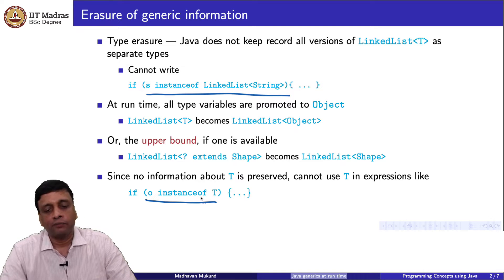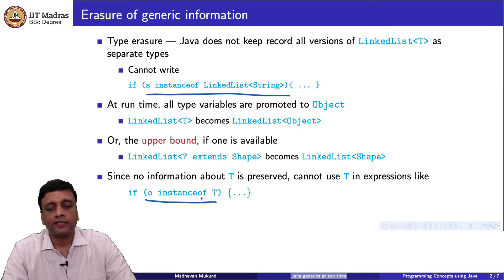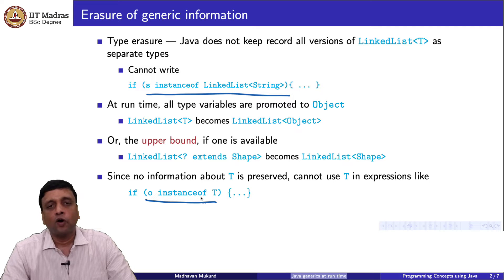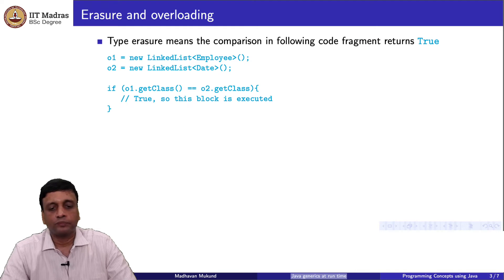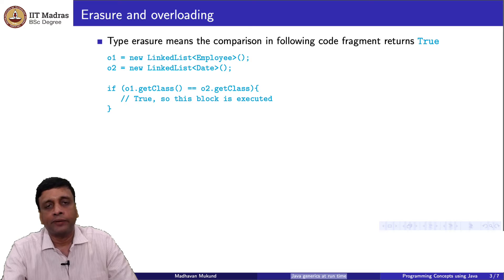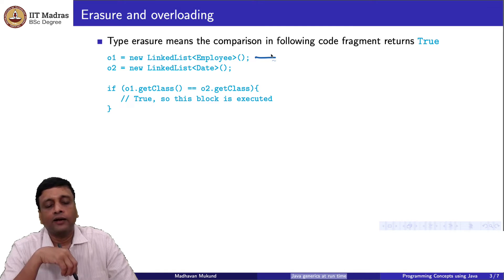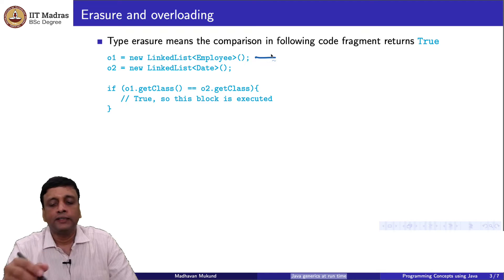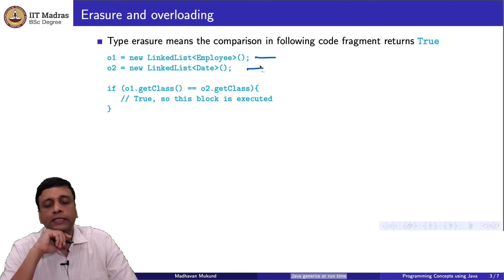We cannot query the generic type at runtime because we do not have information about T. Syntactically, this means in our Java code we cannot write instanceof with anything to do with generics on the right-hand side — either a concrete instance or a parameterized instance. We cannot use this version of reflection in our Java code.